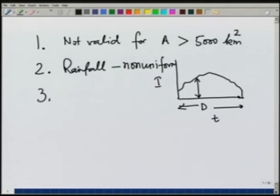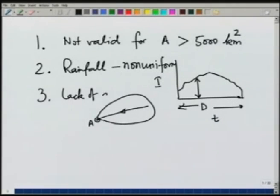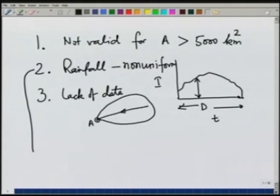The third limitation is that we must have data for deriving the unit hydrograph. If we have a catchment area and want to derive the unit hydrograph at point A, we should have a gauging station at point A. If we do not have a gauging station, we will not know the runoff. Or sometimes, even if we have a gauging station, we may not have the required storm occurring in that area. So lack of data is another limitation which prevents us from deriving a unit hydrograph.